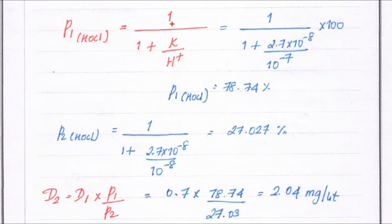We know all the values, so we can substitute. P1 = 1 / (1 + (2.7 × 10⁻⁸) / (10⁻⁷)) × 100. Calculating this gives P1 (HOCl at pH 7) = 78.74%.